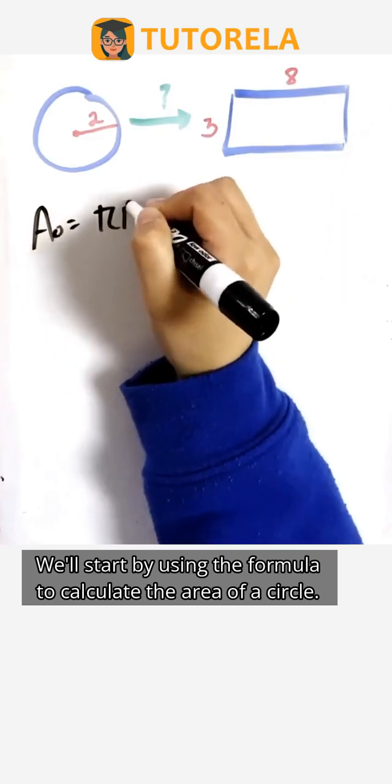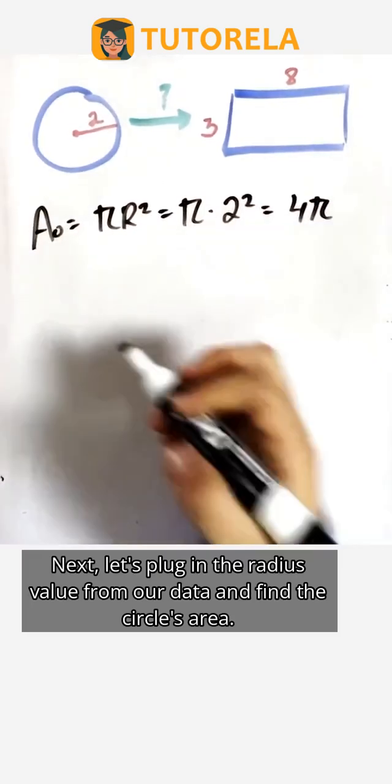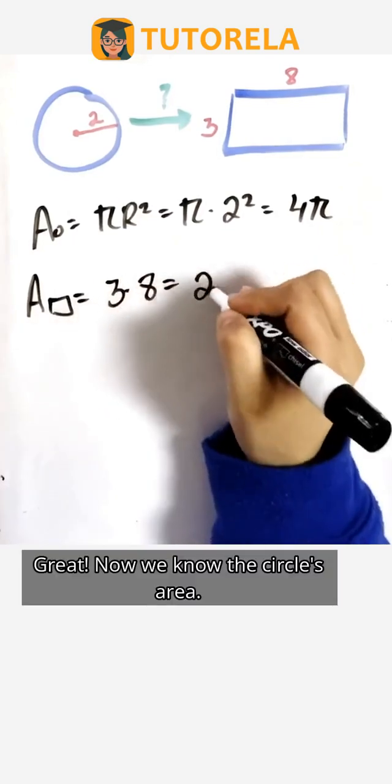We'll start by using the formula to calculate the area of a circle. Next, let's plug in the radius value from our data and find the circle's area. Great, now we know the circle's area.